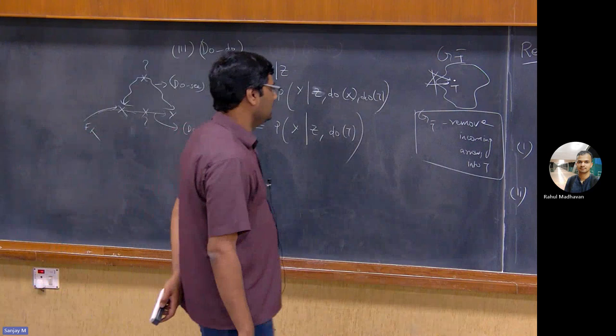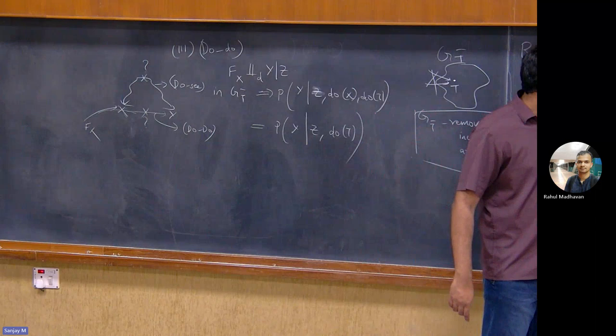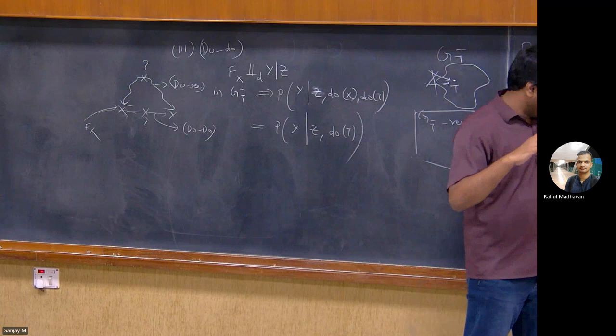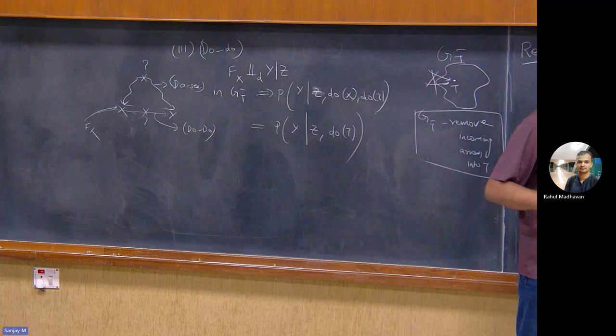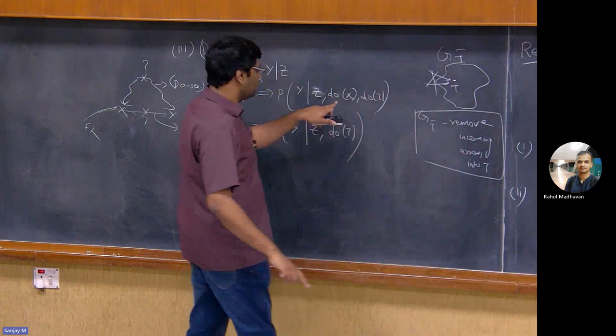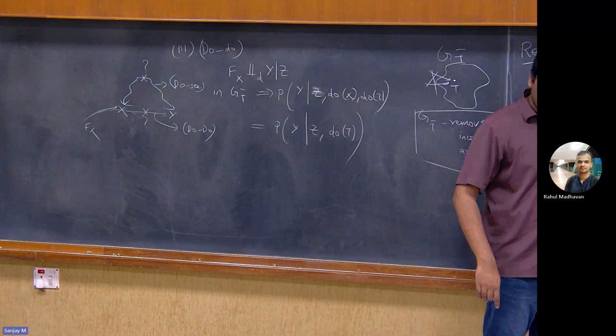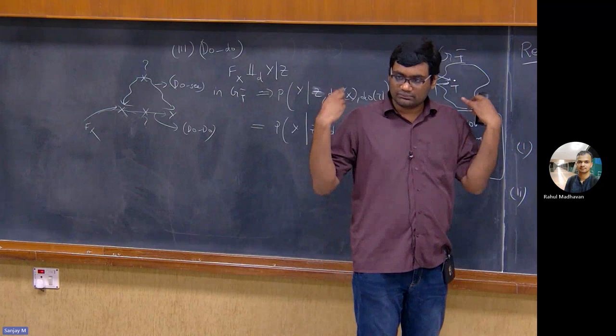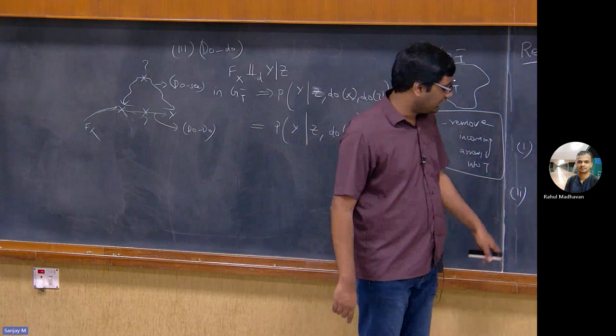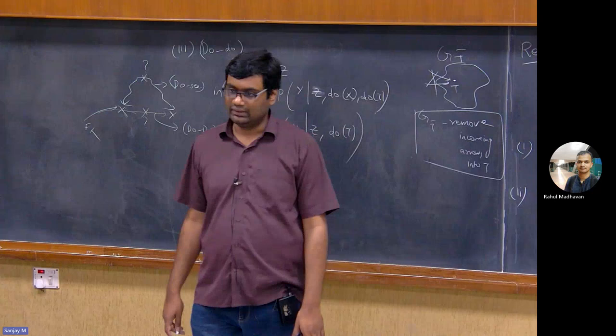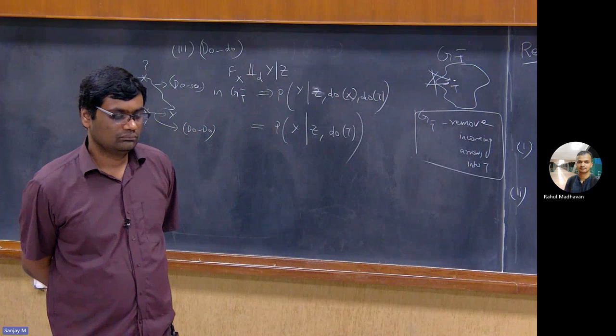One looks very similar to three. But in statement one the d-separation is made within one distribution, while in every other statement there are two distributions — one interventional where you intervene on both X and T, and one where you intervene only on T. So this is invariance across distributions, while the first is conditional independence within a distribution. You can just treat the surgical graph as the base graph.